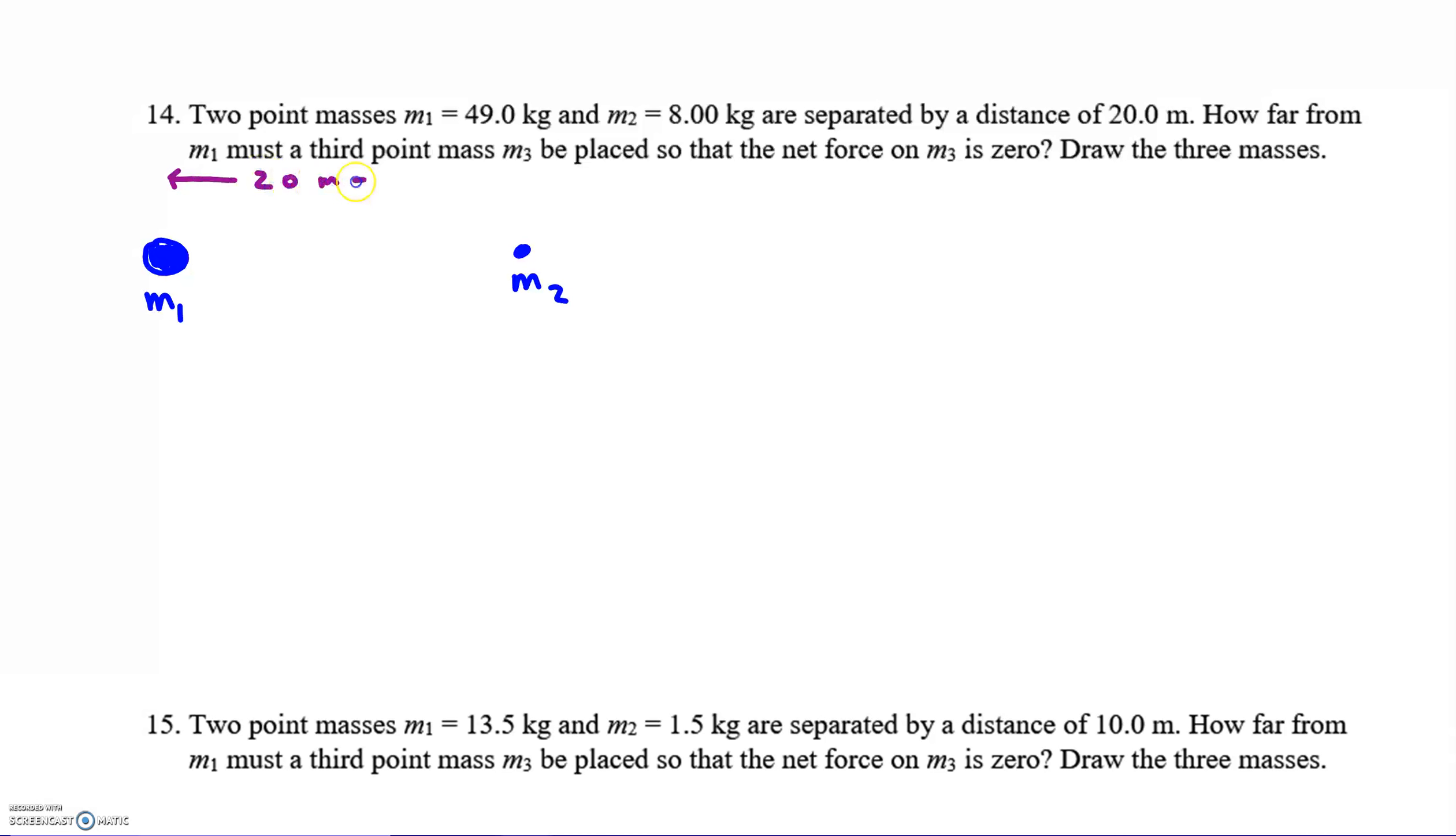And then the other is M2 of only 8 kilograms. They say where must a third point mass be placed? How far from M1 so that the net force on M3 is zero? Let me first add in the distance. This total distance is 20 meters. First point to make is these things are out in outer space, far from any planets, stars, far from any other objects.